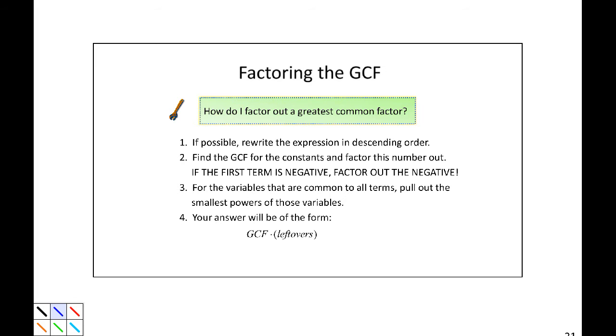Well first, if possible, rewrite the expression in descending order. Second, find the GCF for the constants and factor this number out. If the first term is negative, factor out the negative. That often saves us a lot of trouble.